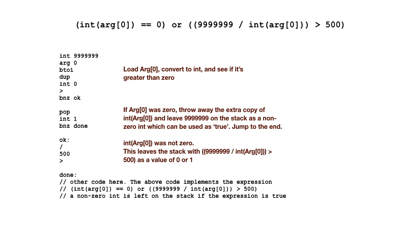If arg zero was not zero, so bnz, so greater than pushes one, and bnz sees one is not zero, so branch to okay — we get here. And this takes 999, which was still on the stack from the beginning, divides it by the duped copy of the integer form of arg zero, and checks that the result of that is greater than 500, and pushes that to the stack as zero or one. And now that zero or one becomes the only thing on the stack — that is the true or false value. So that whole expression winds up being what this program expresses.